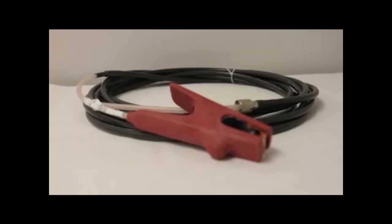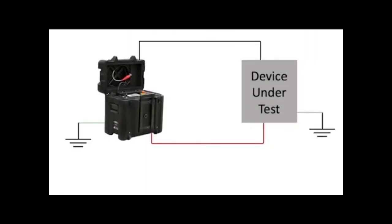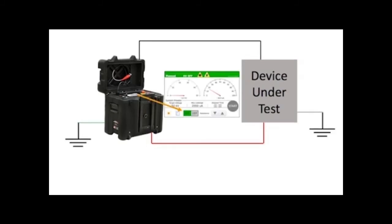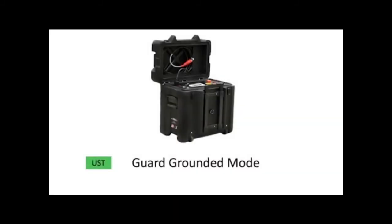Finally, connect the high voltage cable from the DC HiPOT to the DUT. You use the grounded mode when the DUT is connected to the ground and the GST button is selected on the DC HiPOT. Now we will discuss guard grounded mode.